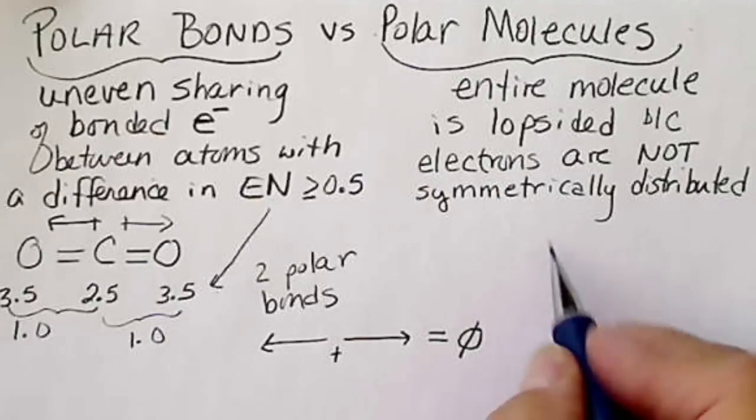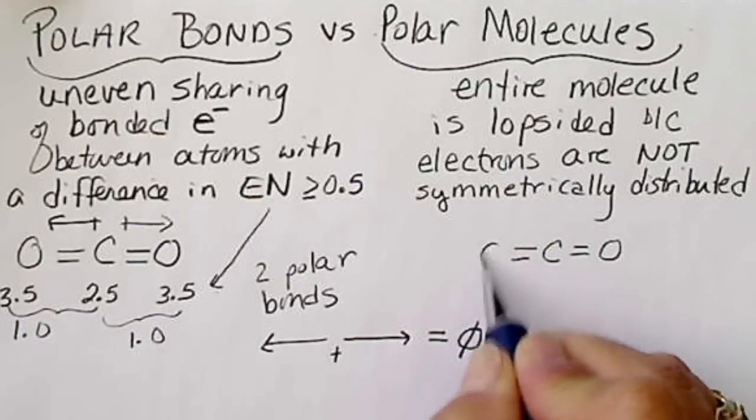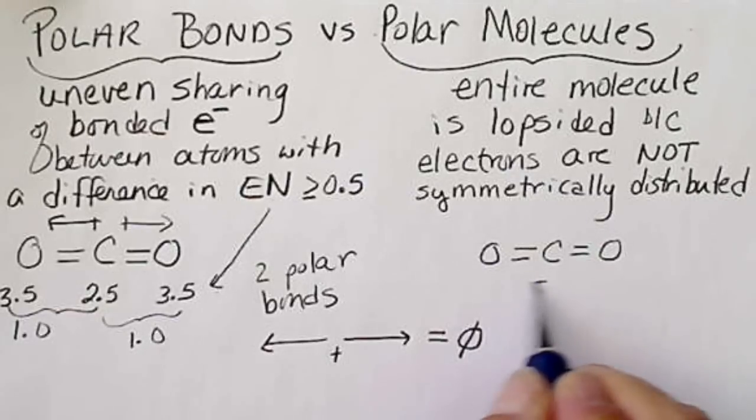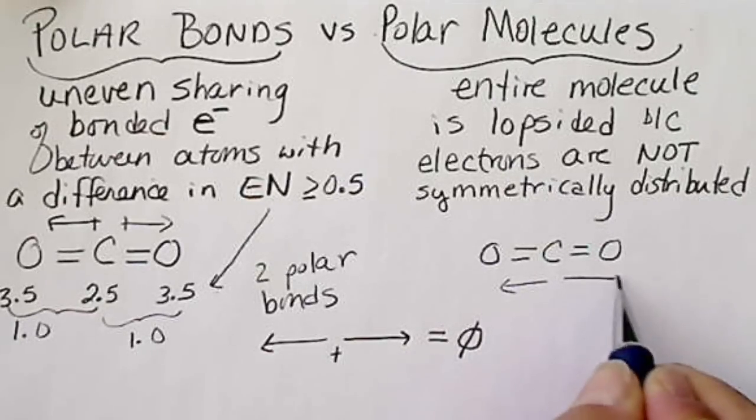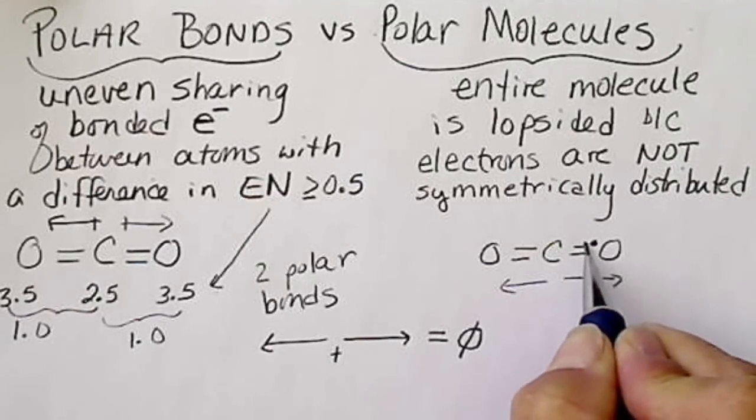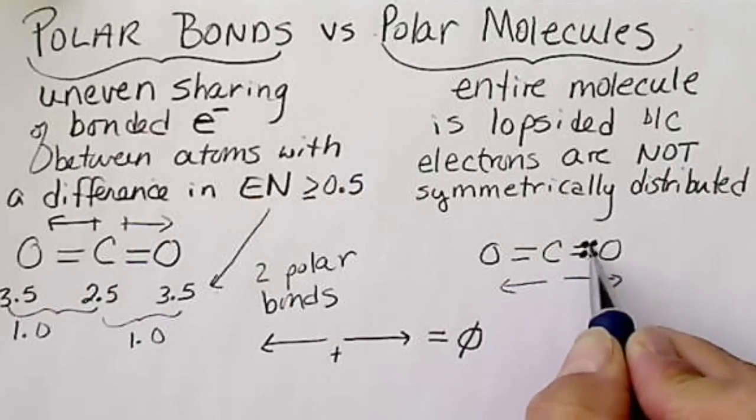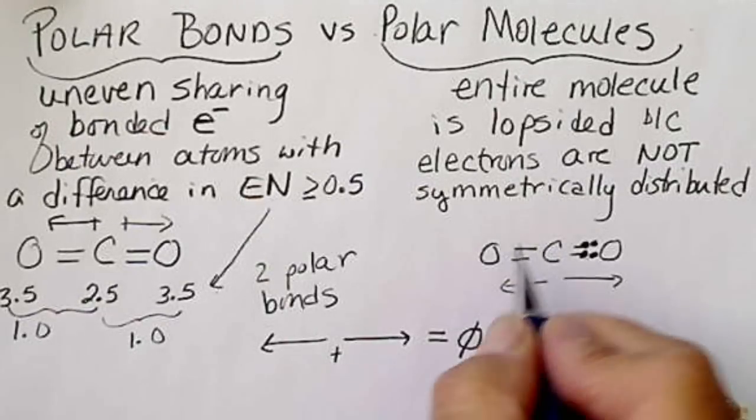If the molecule is symmetrical, like CO2, we have a pull in that direction and a pull in that direction of electrons. The electrons are going to be closer to the oxygen. These are really carbon's electrons, but they're pulled closer to oxygen.